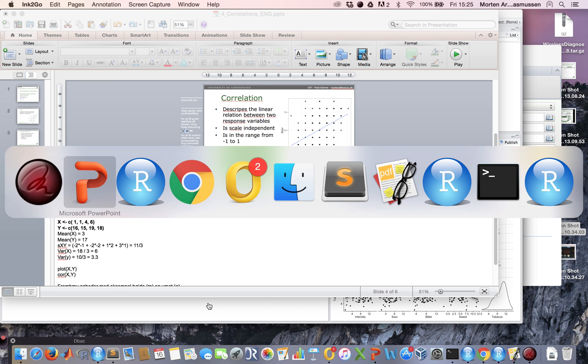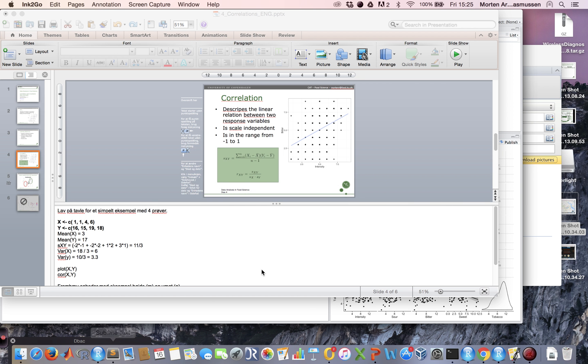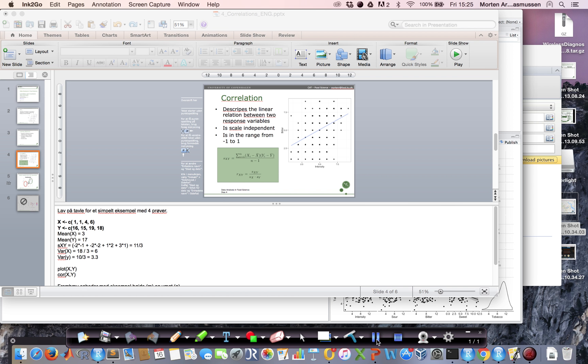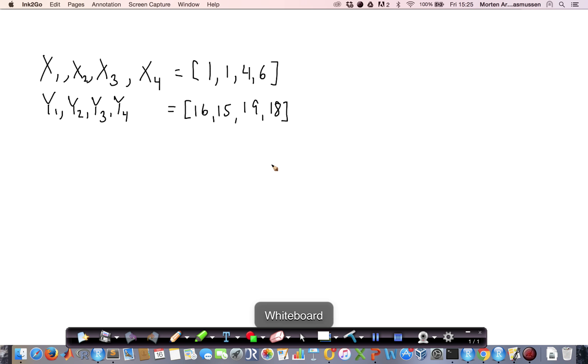So let's go and see how this is done. Here we have two vectors, two response variables, x and y, and we have four observations. Let's try to make a scatter plot of these with x and y on the two axes. We have 1,16, and 1,15, so we have these four points plotted on an x and a y axis.